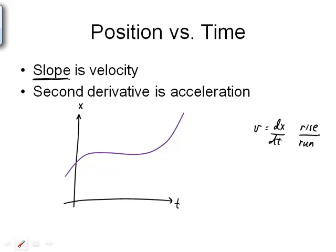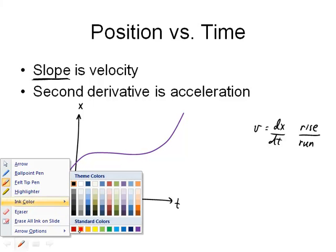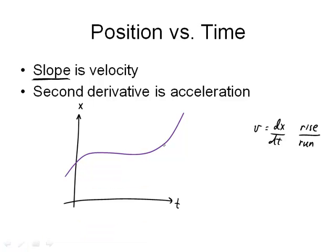And so at some location on this graph, pick an arbitrary point, I'll just choose here, there's a slope tangent to that curve. And this slope, the slope of this line, this tangent line, is the velocity.